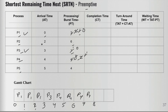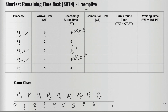At time eight, P4 is done. We now have P2 and P5. P5 has the shorter remaining time, so P5 runs. Since no further competition changes occur, P5 runs for its full four units from time eight to time twelve.